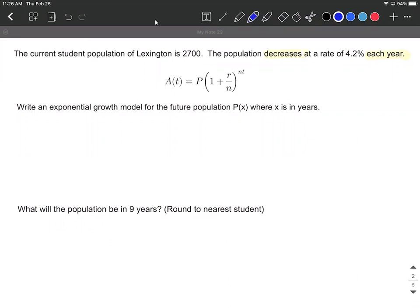So to get going on this, what I'd like to do is list out all my variables off to the side. What we're going to be doing is writing an exponential growth model for this future population of P of X where X is in years.